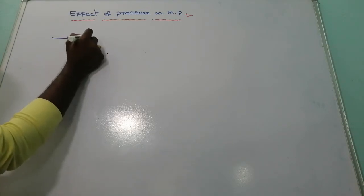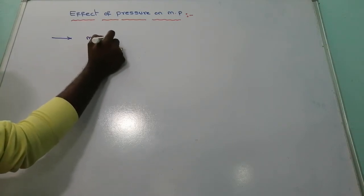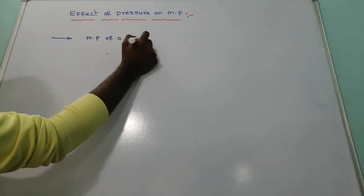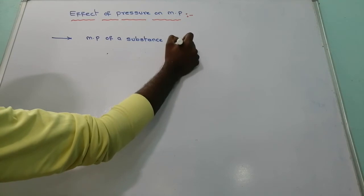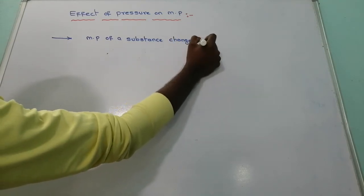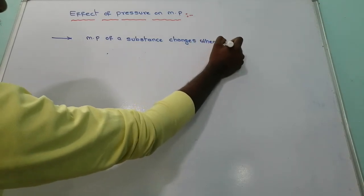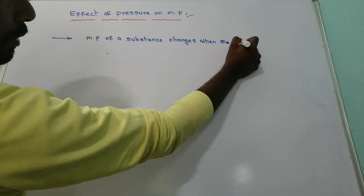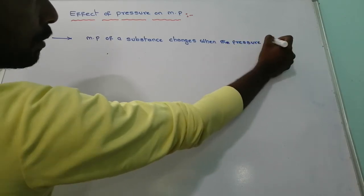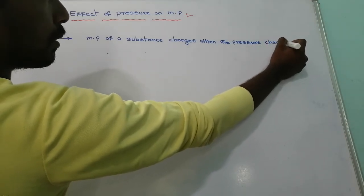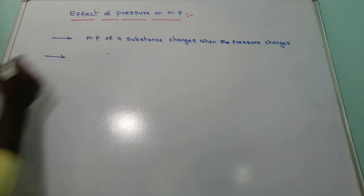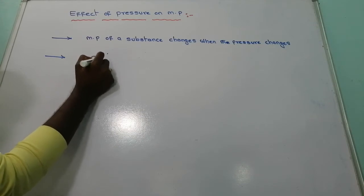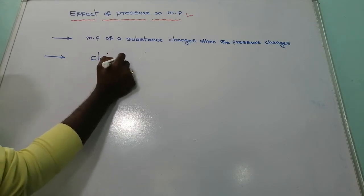The melting point of a substance changes when the pressure changes. This was stated by the scientist Clausius-Clapeyron.